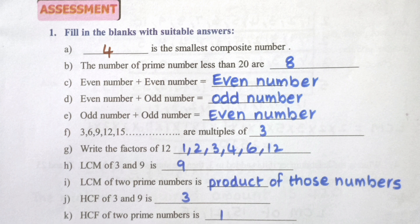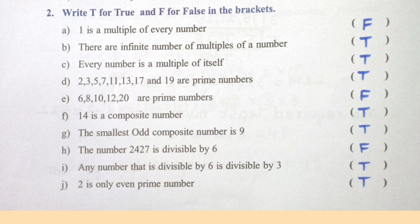HCF of 3 and 9 is 3. HCF of 2 prime numbers is 1. True/False: 1 is a multiple of every number — False. There are infinite multiples of a number — True. Every number is a multiple of itself — True. 2, 3, 5, 7, 11, 13, 17 and 19 are prime numbers — True. 6, 8, 10, 12, 20 are prime numbers — False. 14 is a composite number — True. The smallest odd composite number is 9 — True. 2427 is divisible by 6 — False. Any number divisible by 6 is divisible by 2 — True. 2 is the only even prime number — True.